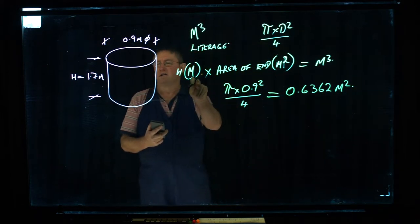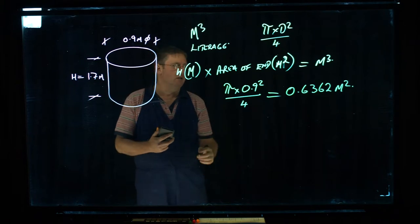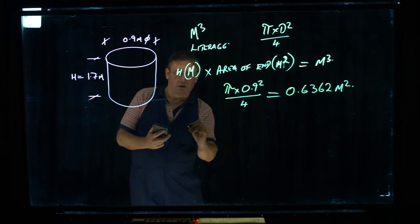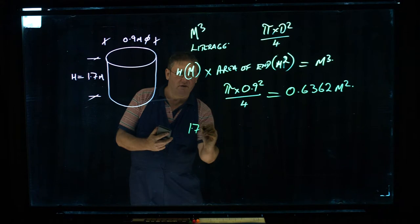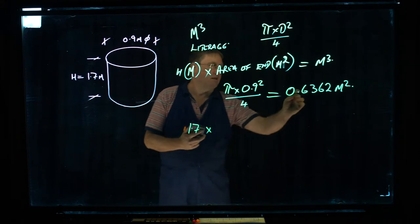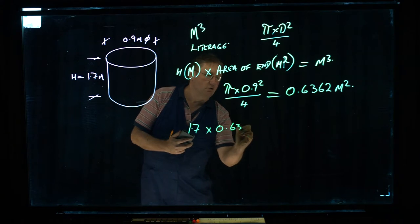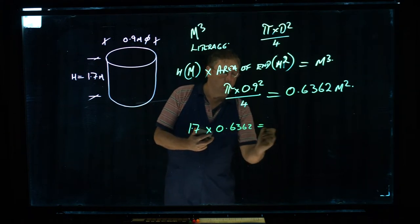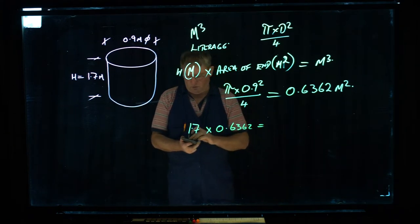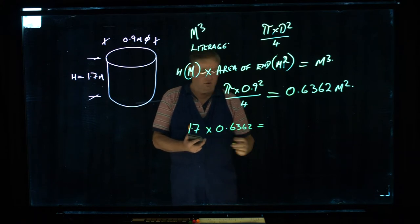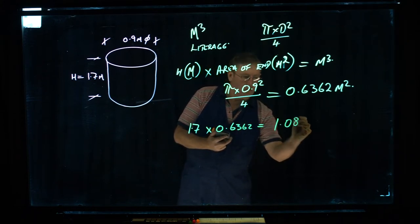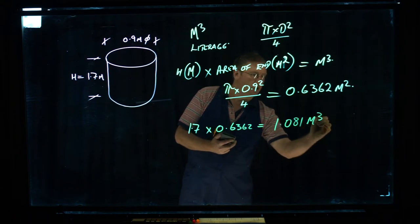We know what the height is over here, it's 1.7 metres. So I'm going to write that below it. 1.7 times the area of the end, 0.6362 equals, we get 1.081 metres cubed.